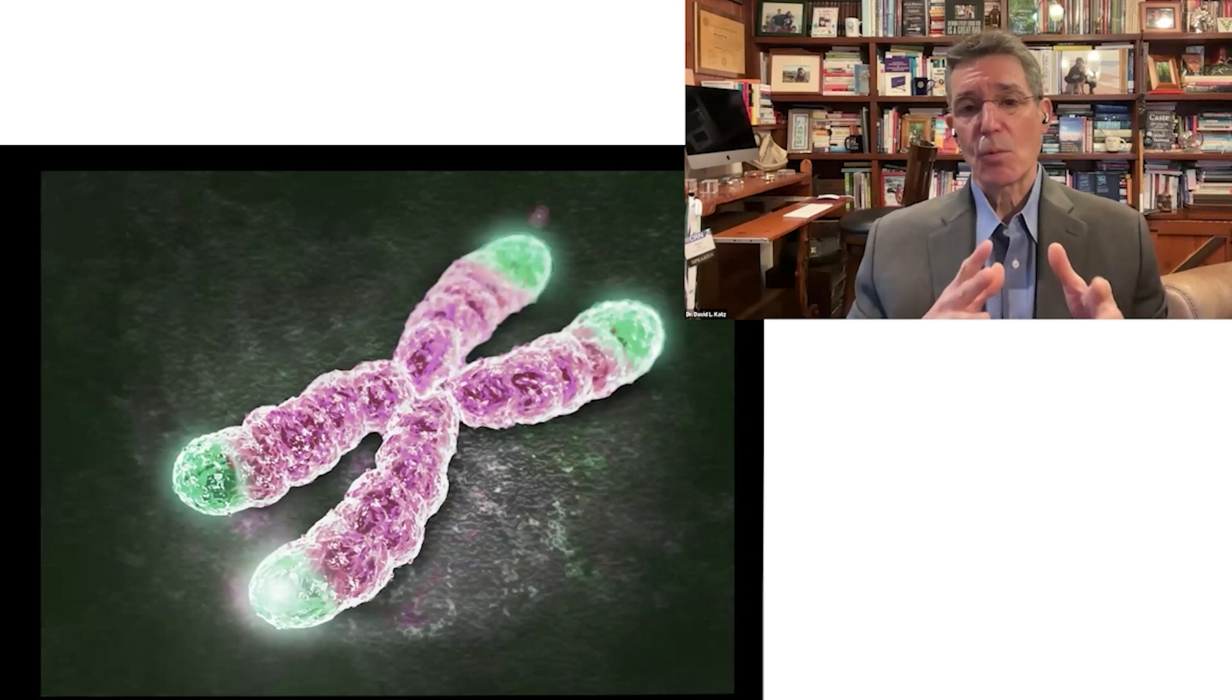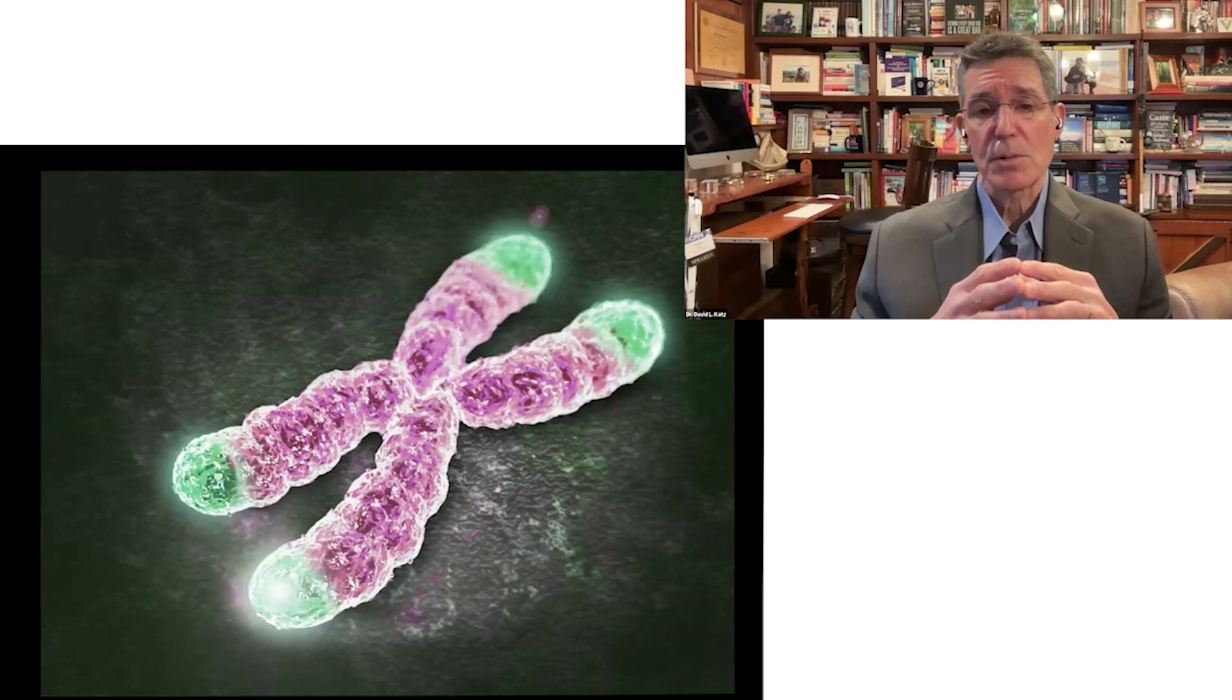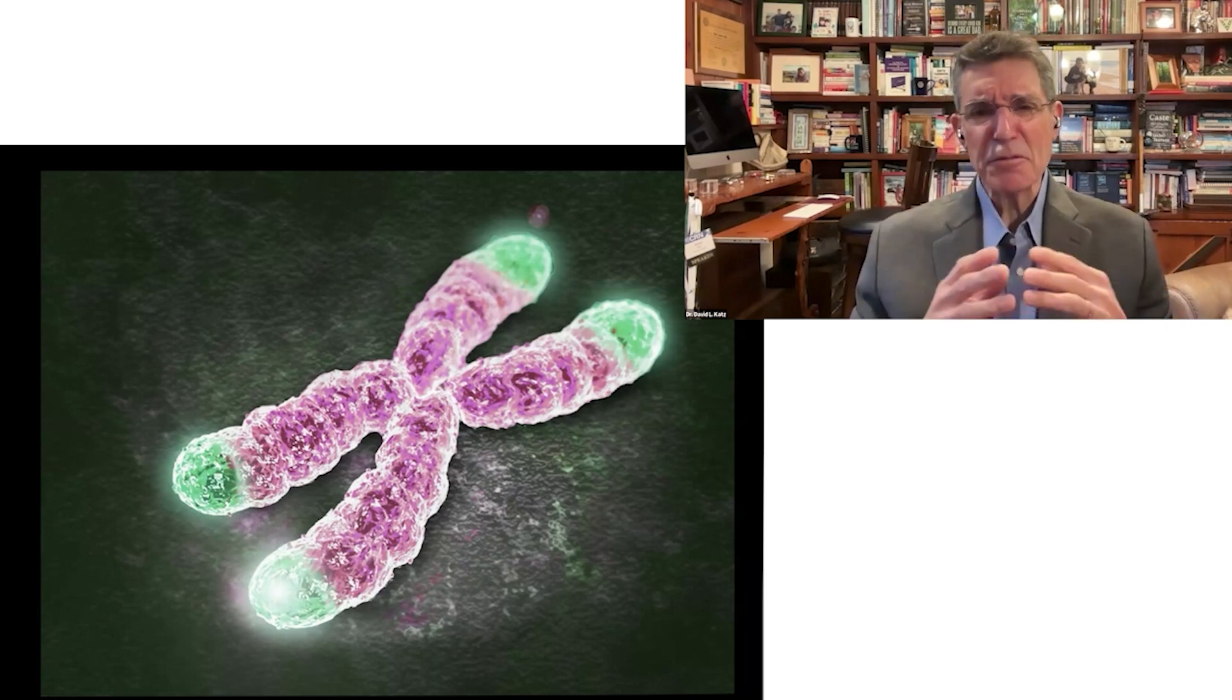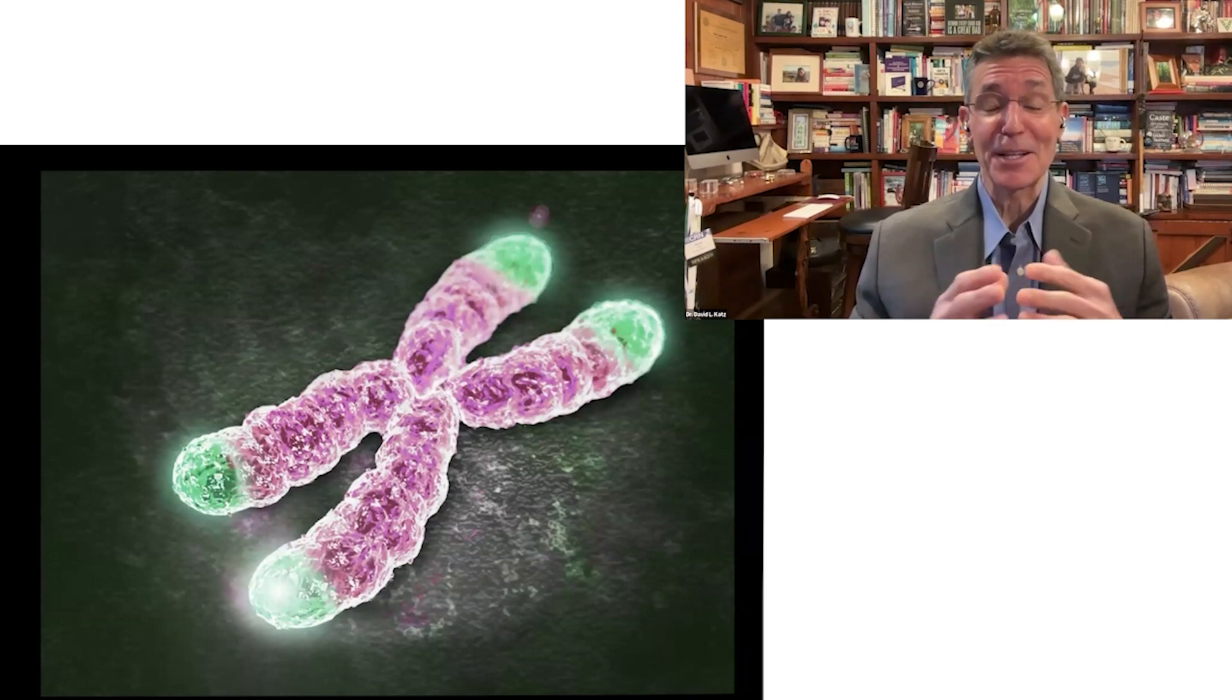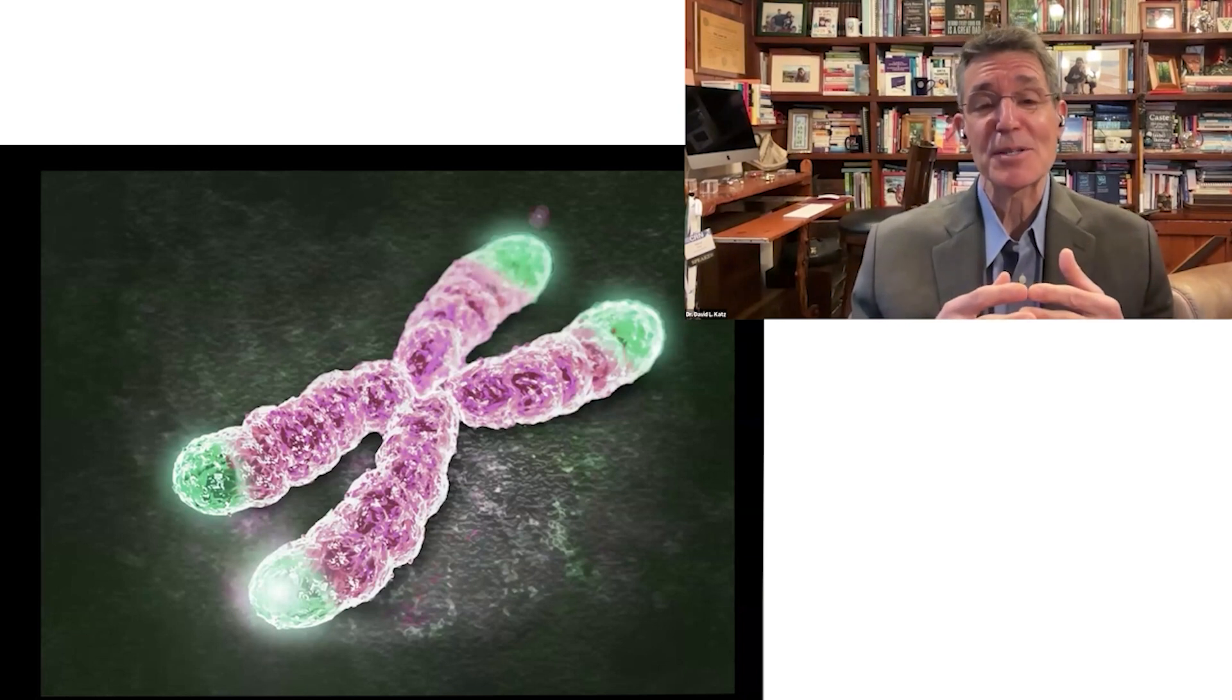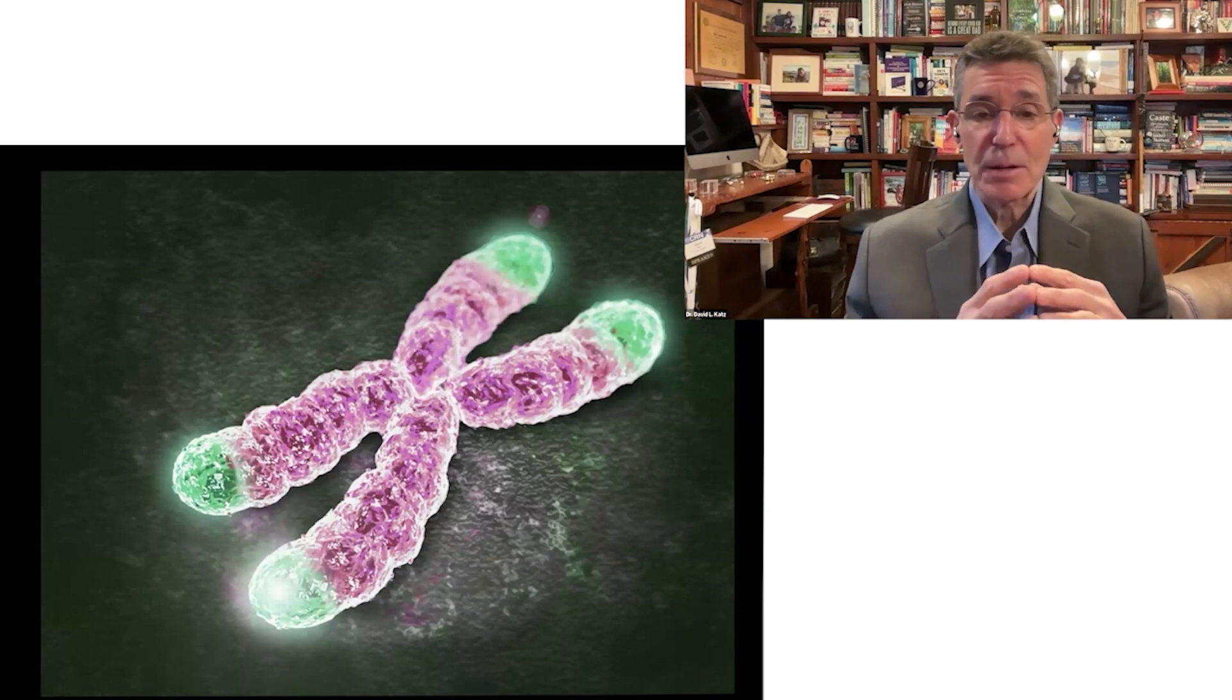And taking this all one step further still, we can actually change the architecture of our chromosomes. So those green tips shown here at the end of a chromosomal pair are telomeres. They behave very much like the plastic caps at the end of a shoelace, keeping everything from unraveling. And if you've ever lost that plastic cap from the end of your shoelace, you know that your shoelace is apt to follow very much the same with chromosomes. So if you have compromised telomeres, damage to the rest of your chromosome is apt to ensue. And obviously that's a very bad thing.